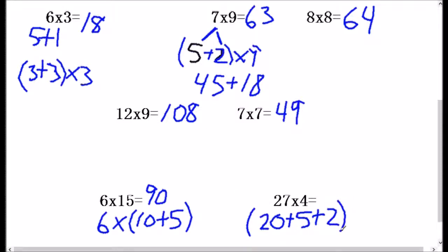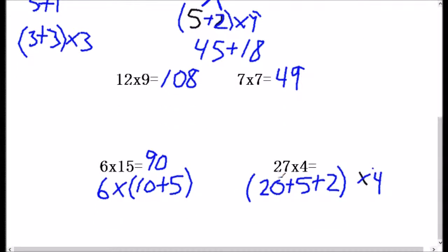20 times 4. Well, 2 tens times 4 is 8 tens or 80. Plus 5 times 4 is 20. Plus 2 times 4 is 8. Did you get 108?